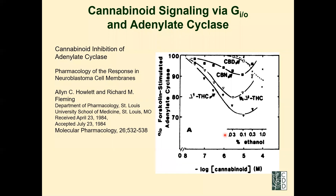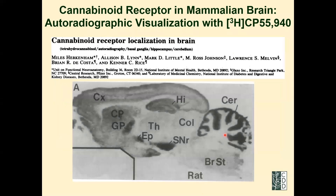At the same time, a group at NIH led by Miles Herkenham — well known for neuroanatomy work — took brain slices from rats, used radioligands to image them via autoradiography, and showed where these receptors are present. That was very interesting.